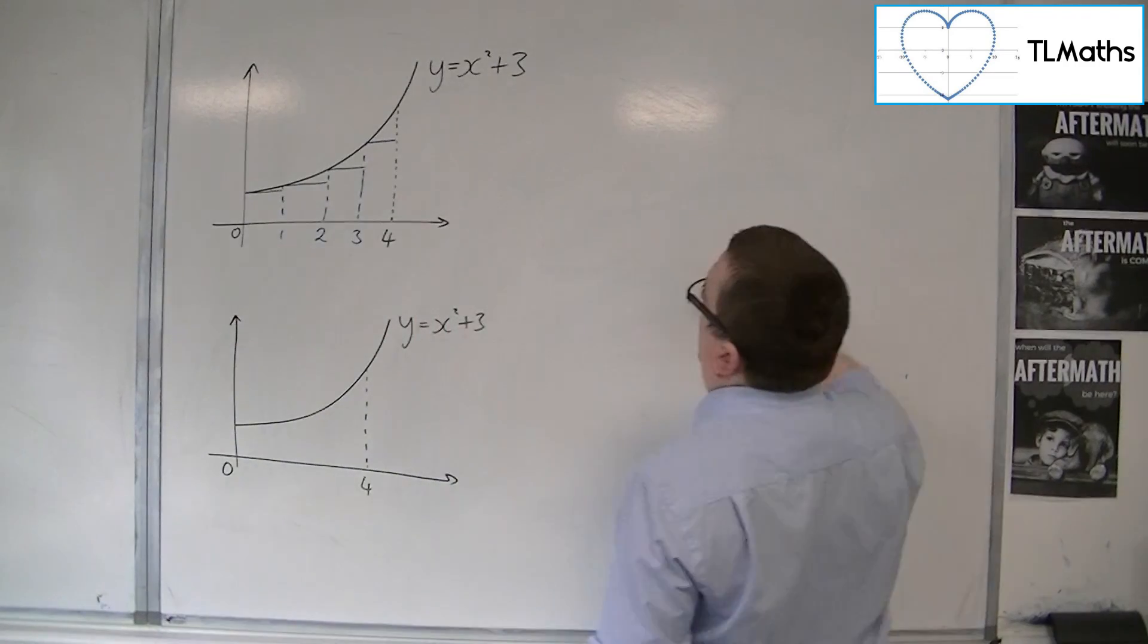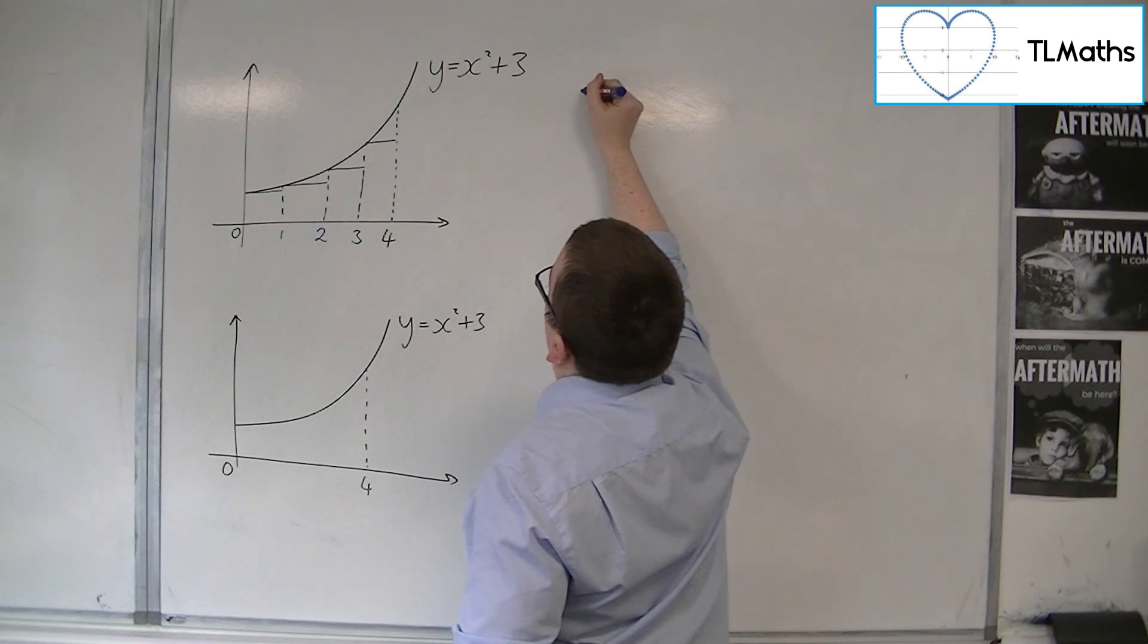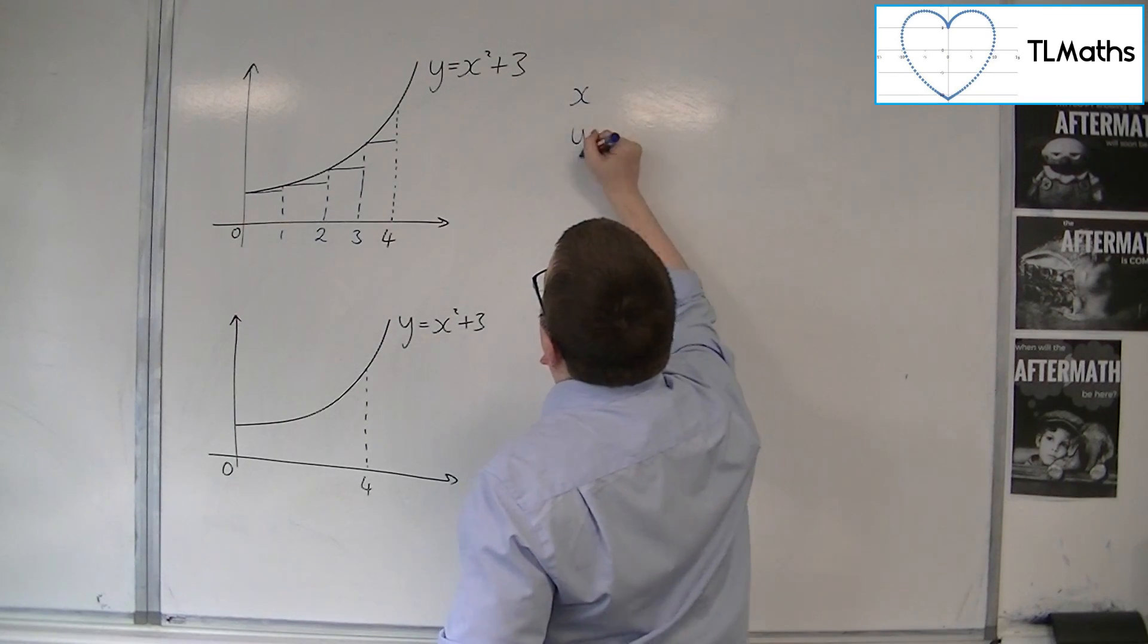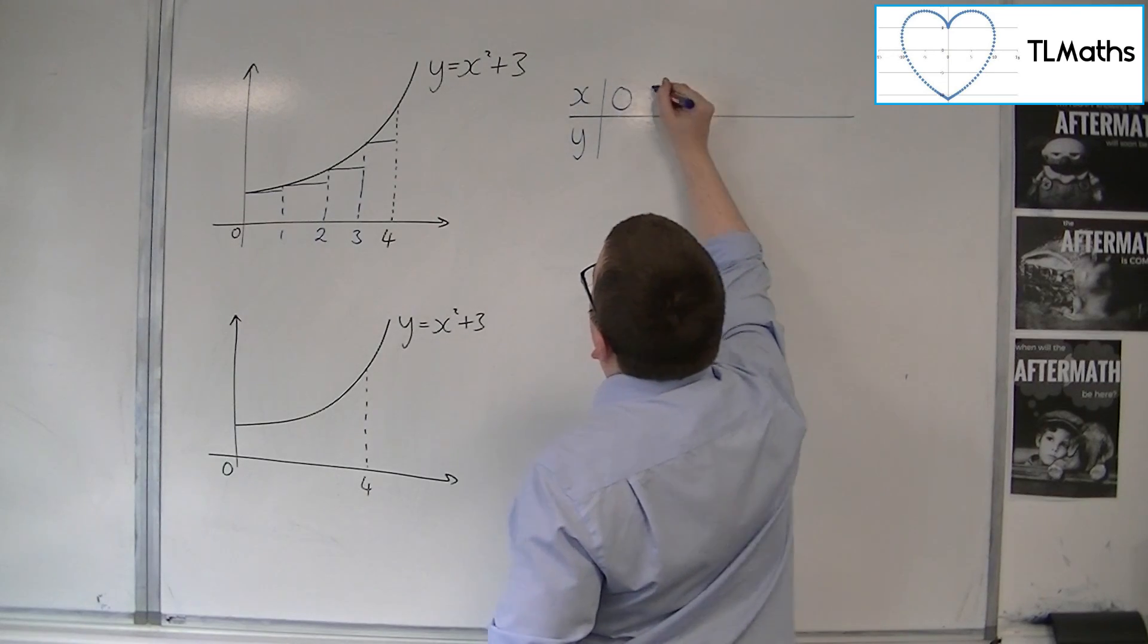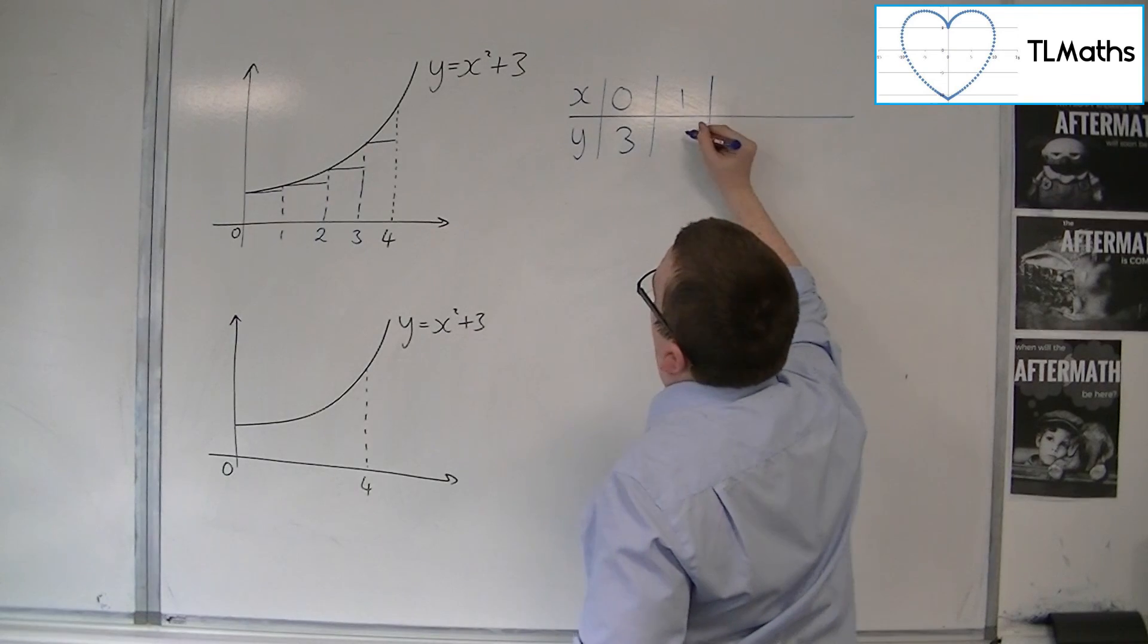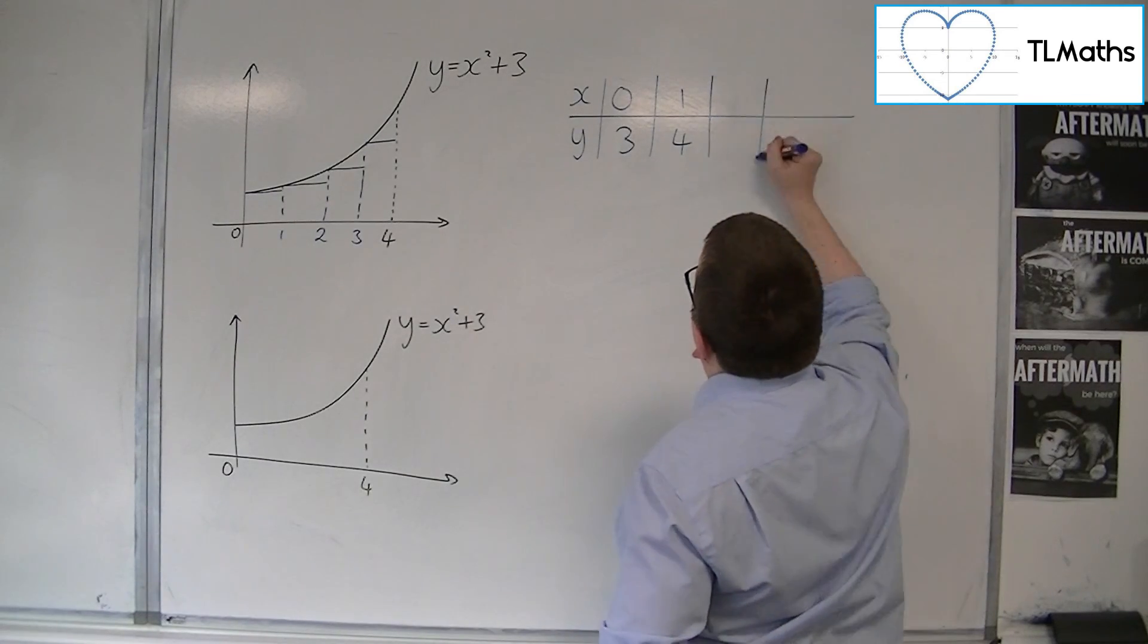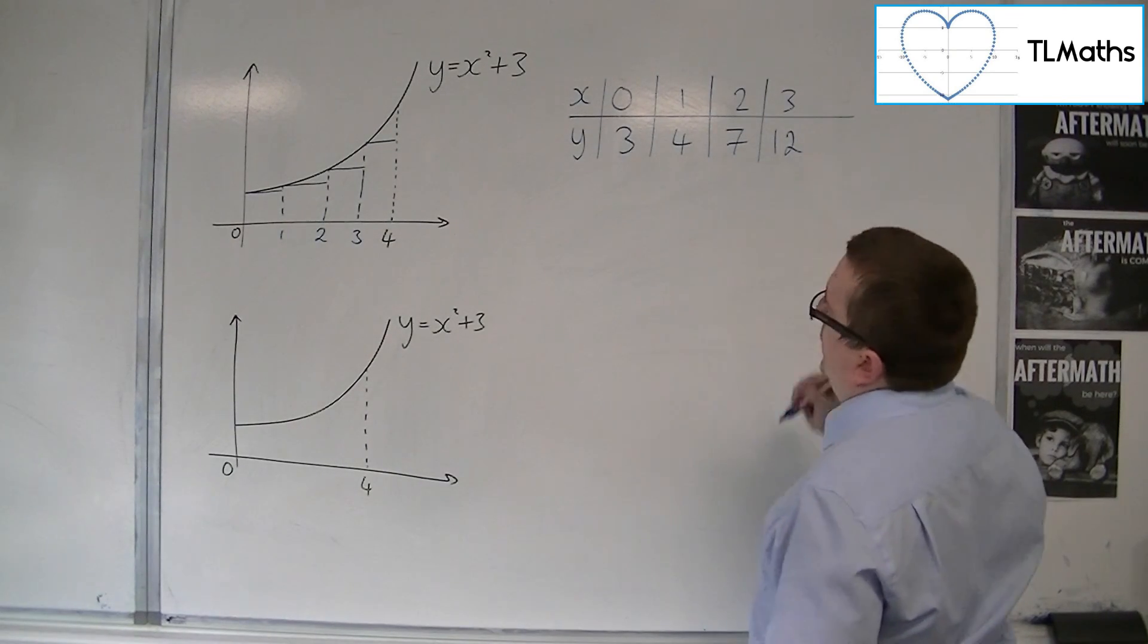So I might set up a little table with these x values and these y values. When x is 0, I'm going to get 3. When x is 1, I'm going to get 4. When x is 2, I'm going to get 7. And when x is 3, I'm going to get 12.